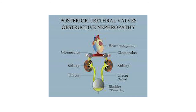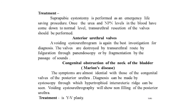Posterior urethral valve obstructive nephropathy can be seen in this picture: the bladder is full, back pressure transmits to the ureter and then the kidney, the kidney parenchyma becomes thin, and pressure goes to the glomerulus and indirectly affects the heart.